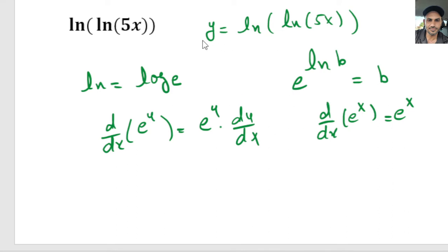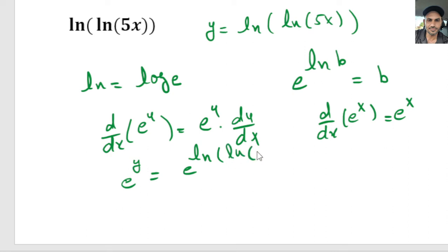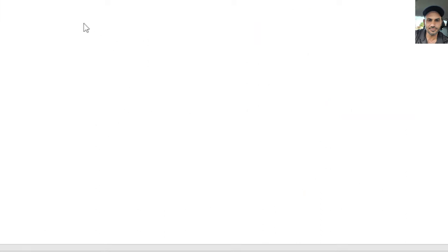Now let's turn this natural log function into an exponential function. I'm going to raise e to the y on the left side and do the same thing on the other side of the equation, so e to the ln of ln of 5x. When we simplify this, e to the ln of ln of 5x is just ln of 5x. So now we have e to the y equals ln of 5x.